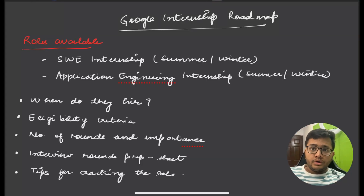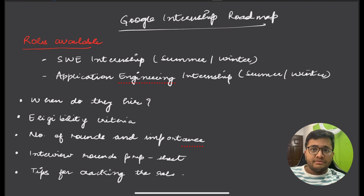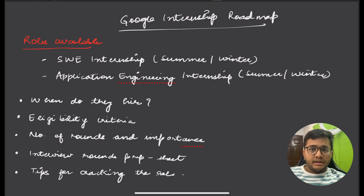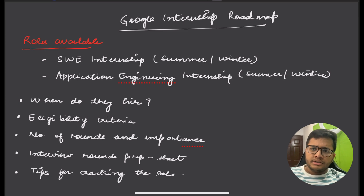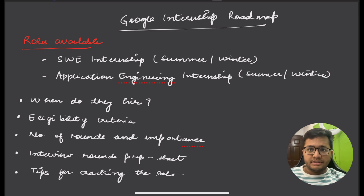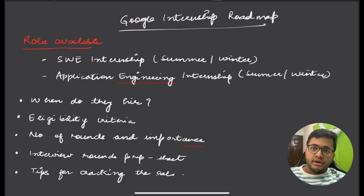There are two internships that Google is currently offering: the Google Software Engineering internship and the Google Winter internship. For summer, it's a two-month internship generally ranging from May to July, and for winter, it's a six-month internship ranging from January to July.